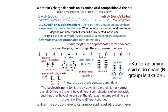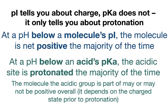Proteins are going to have a lot of these different side chains that are ionizable. You're going to have a combination of amino acids in the protein that are going to be positive and negatively charged. At some pH, you're going to have it where they balance out. The pH at which that happens is called the pI.